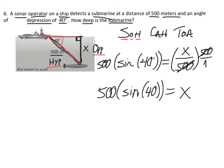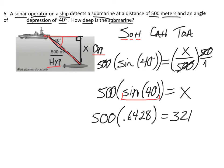First I'm going to change sine of 40 degrees to a decimal to make it a little bit easier to multiply. So it's really going to be 500 times 0.6428, which gives me 321.4. And the units we're using here are meters.